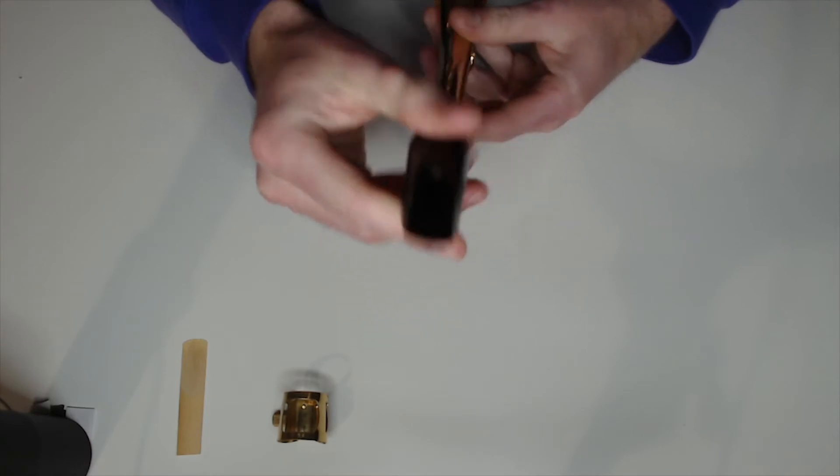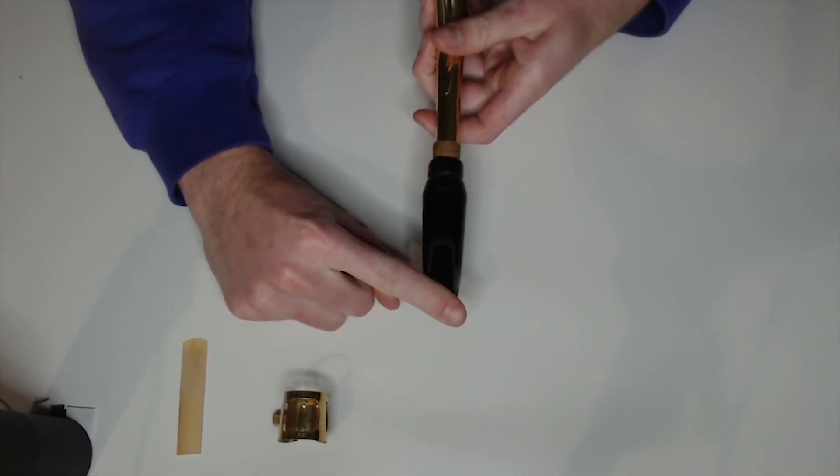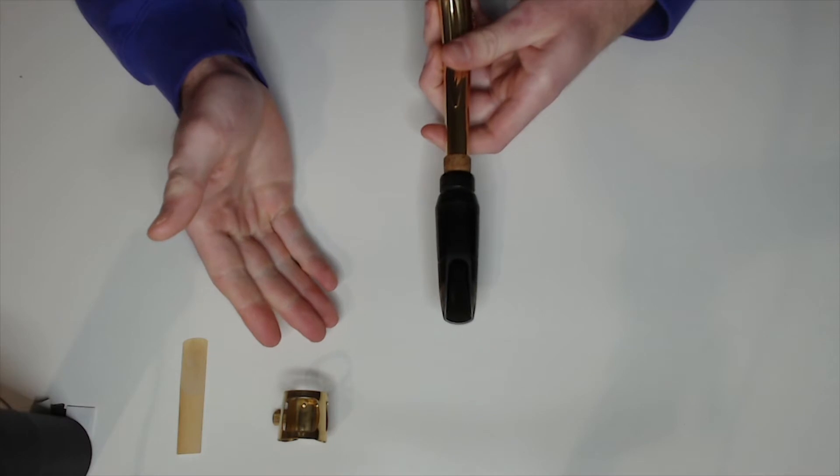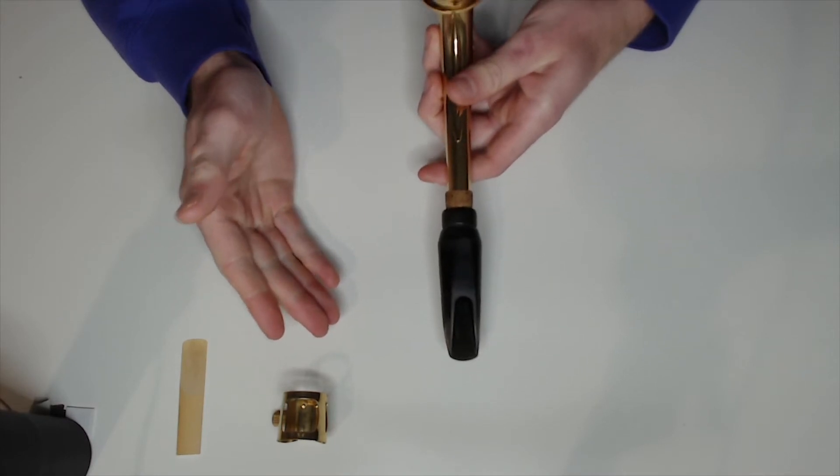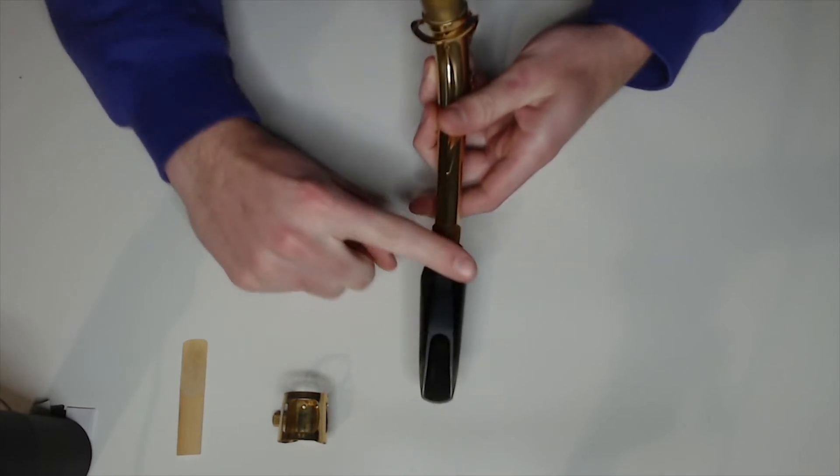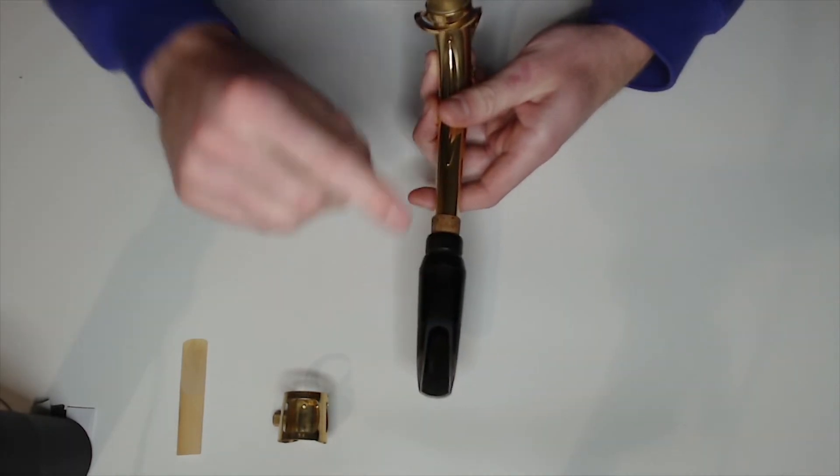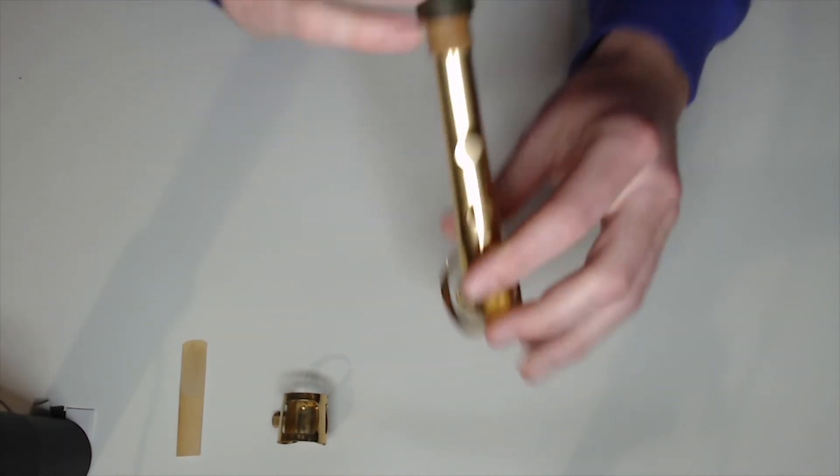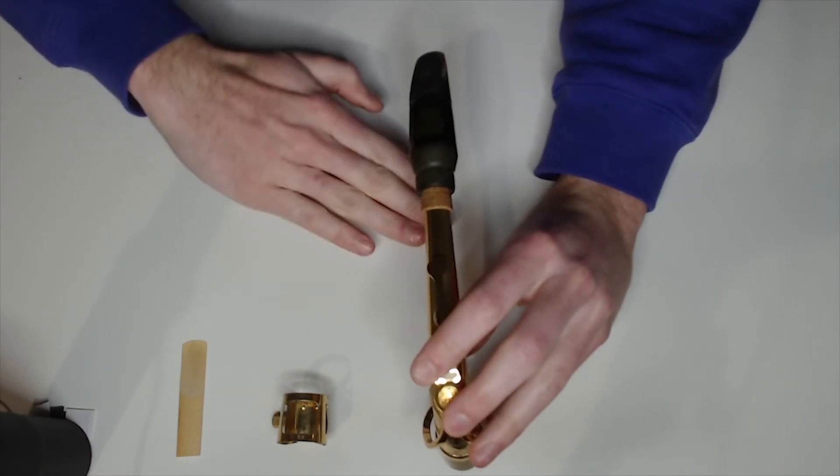Before we move on, make sure that the flat part of the mouthpiece is lined up corresponding to how you play. I play with the saxophone straight out in front of me, not to the side, so I want this flat part to be parallel with the ground, or in this case, parallel with the table.